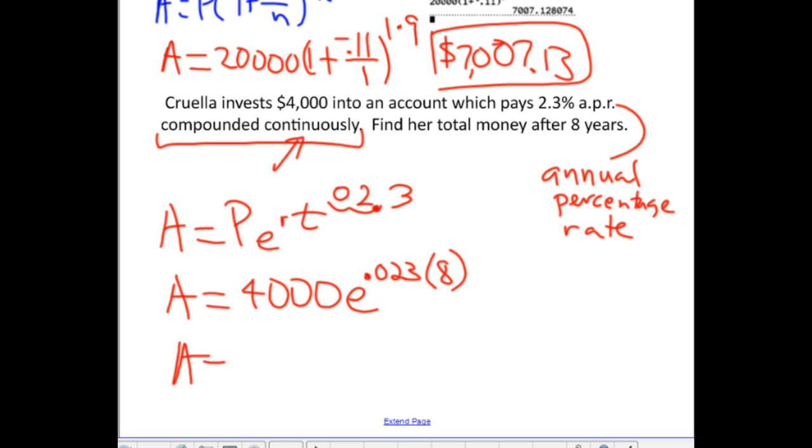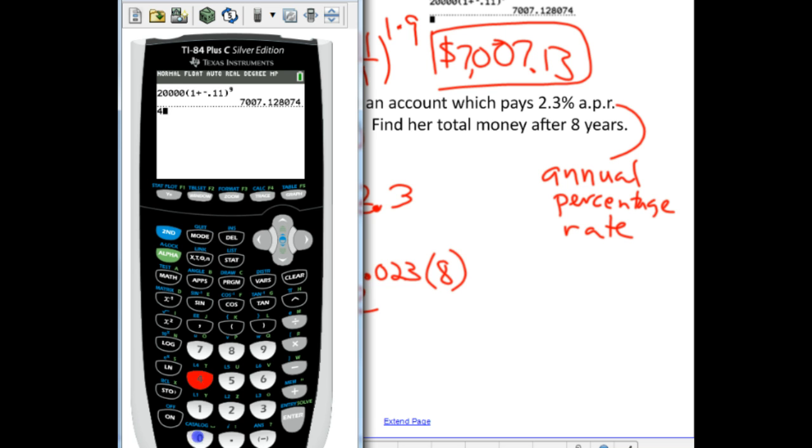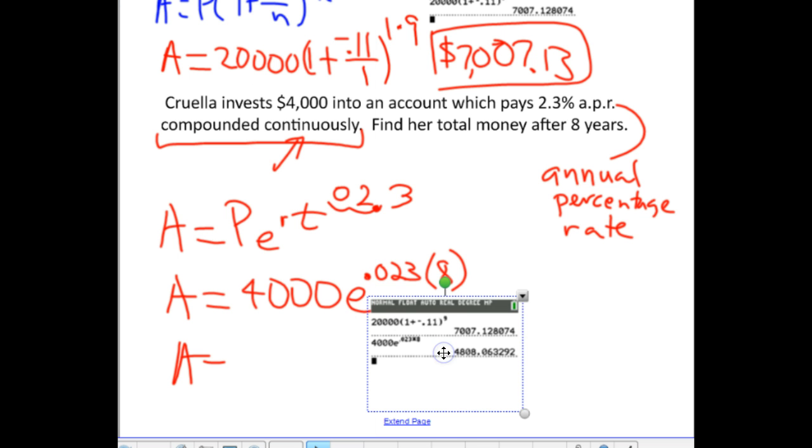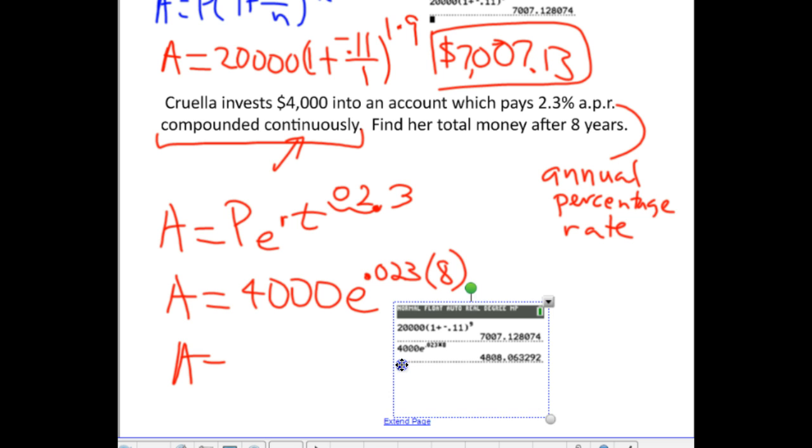So, how much money is she going to have in her account? Well, again, once you put this in, the calculator will do the rest. You're going to go 4,000. Second, LN introduces the E to the .023 power times eight. Hit enter, and you get $4,808.06. So, her total amount of money will be $4,808.06. And so, that's how much she'll have in her account after eight years, because she must have gained $800 in interest.